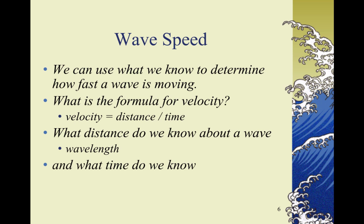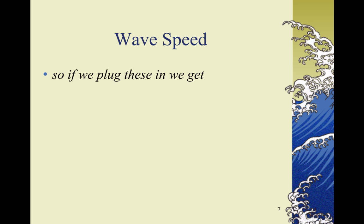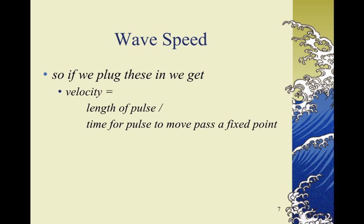Wavelength. Correct. And what time do we know? Period. Correct. So if we plug these in, we get velocity is the length of the pulse, or the wavelength, divided by the time for the pulse to move past a fixed point, the period.